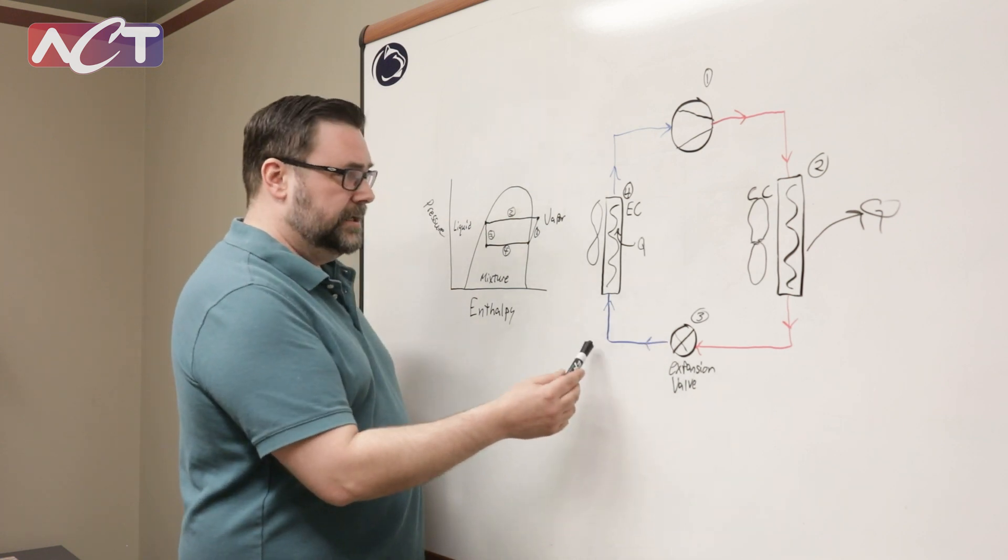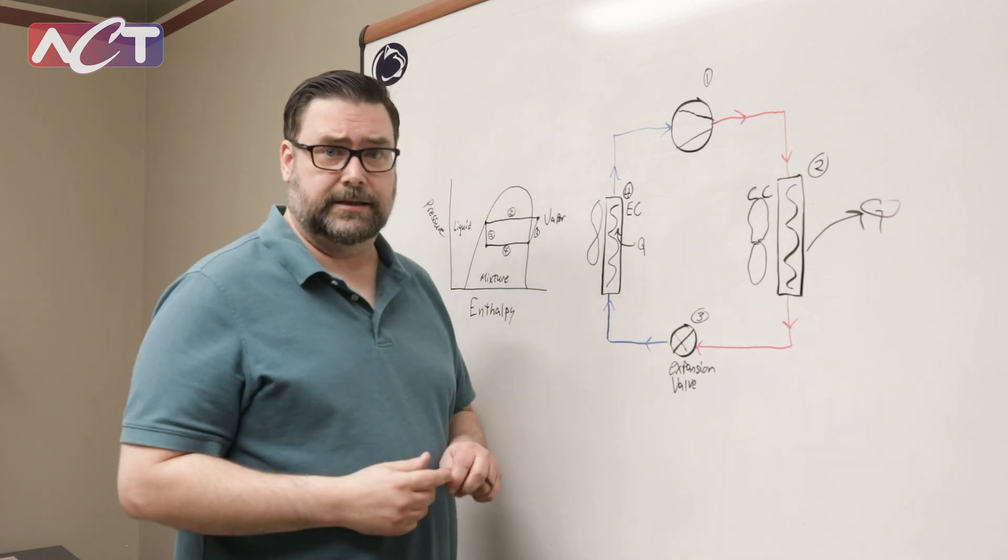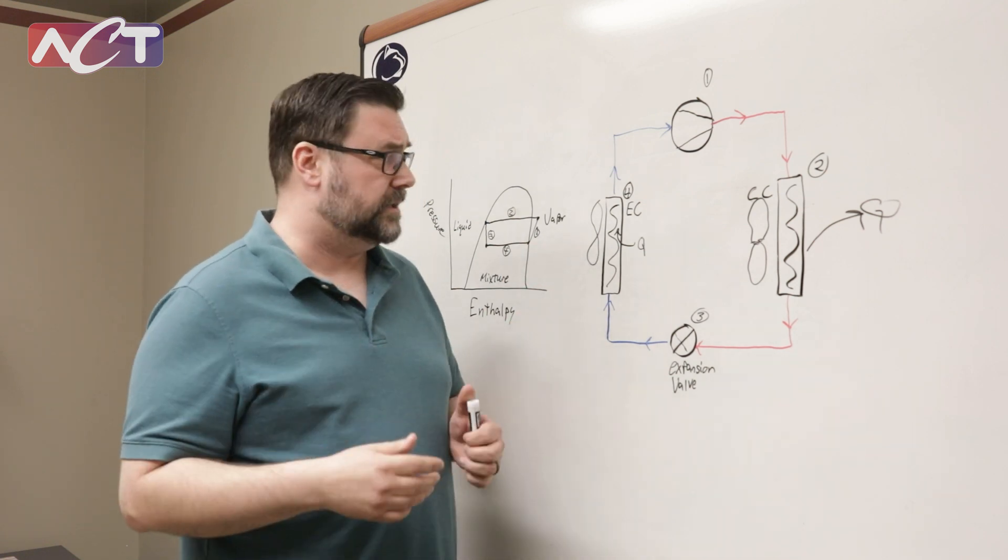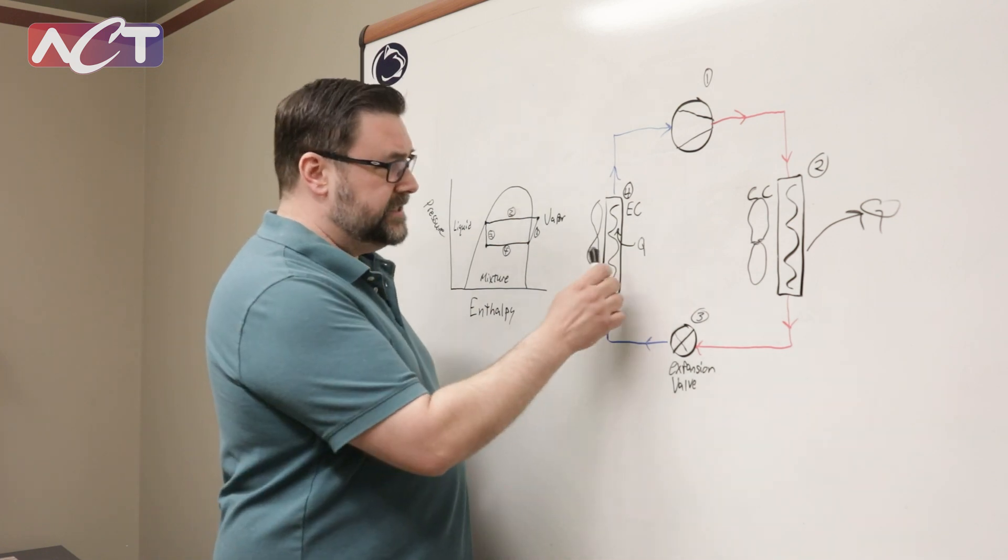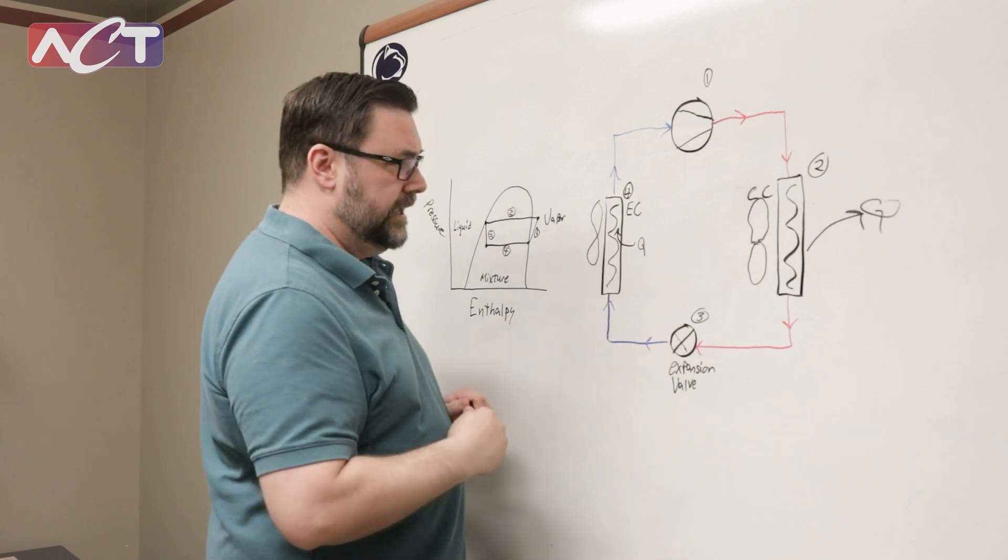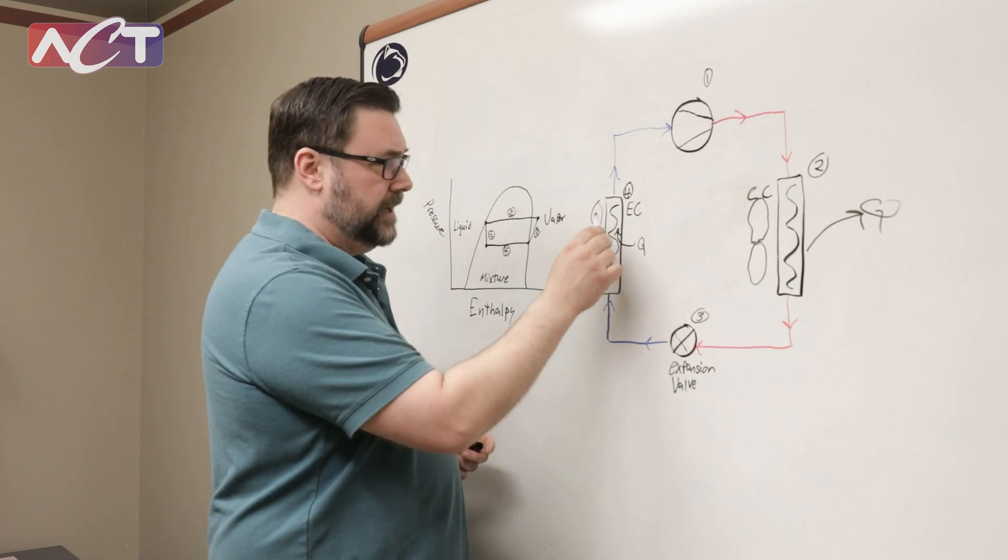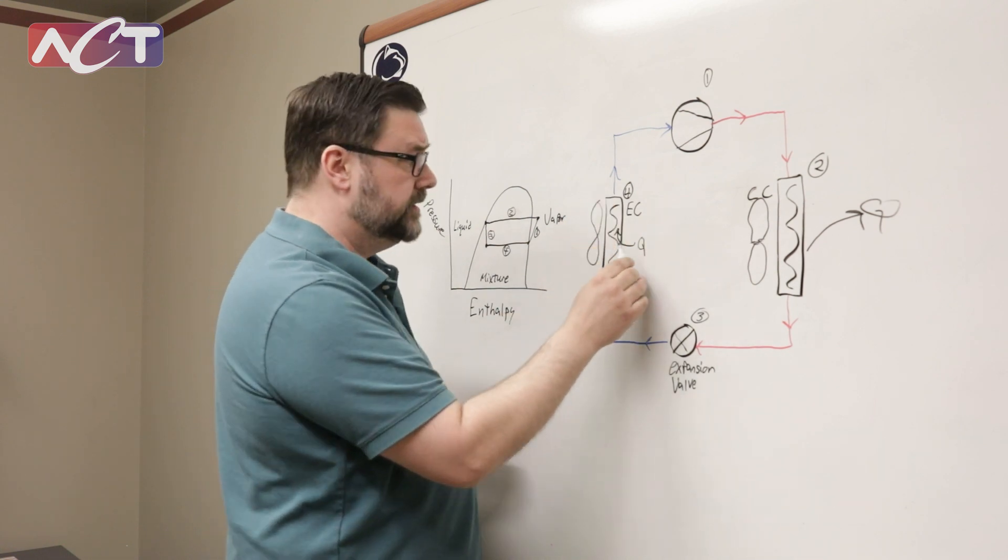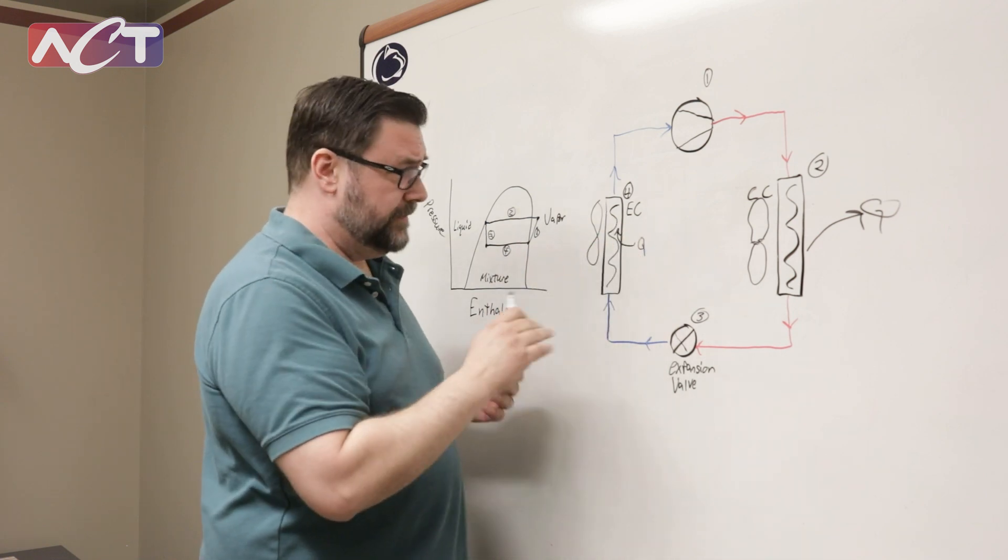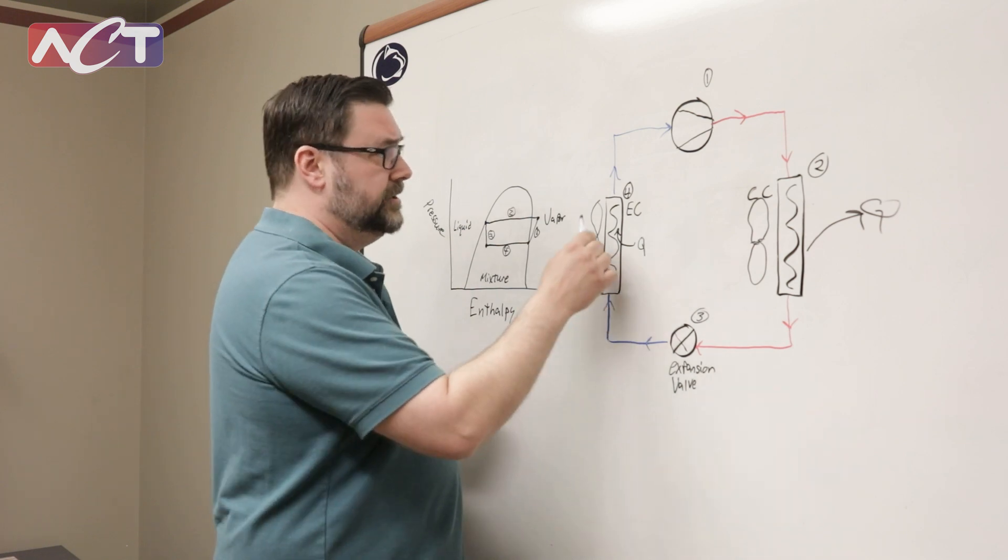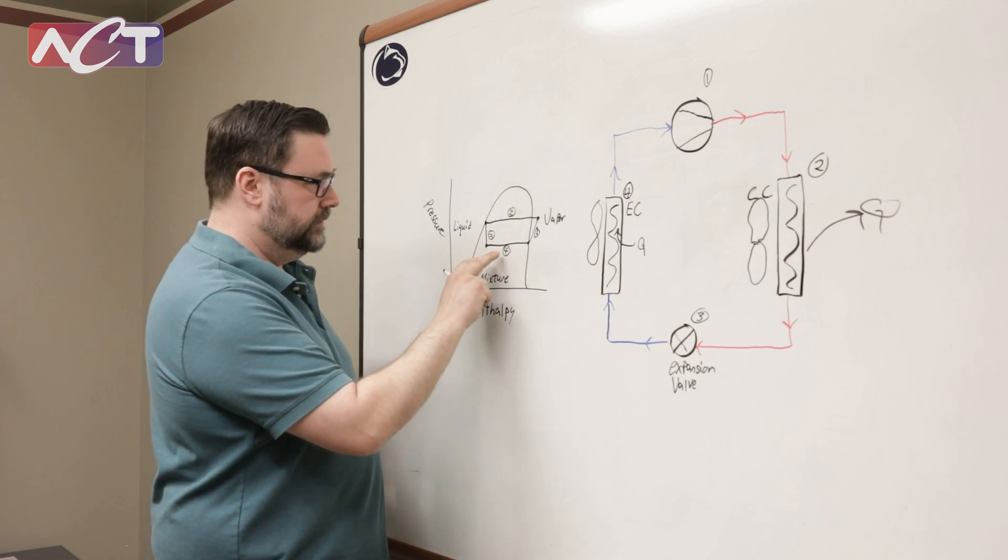So we're going to take that mixture and we're going to take it over to our evaporator coil. Now this is what you would have inside the house where it would be in your basement or wherever it's located, that is a cold coil that the air is blown across. So because it's colder than the environment that it's in, energy is going to flow from the environment into that coil and will get absorbed by the working fluid which is the refrigerant at this point.